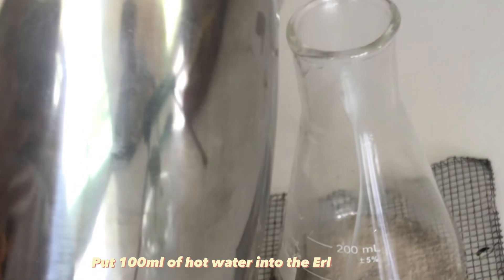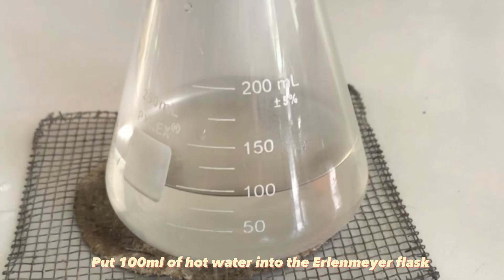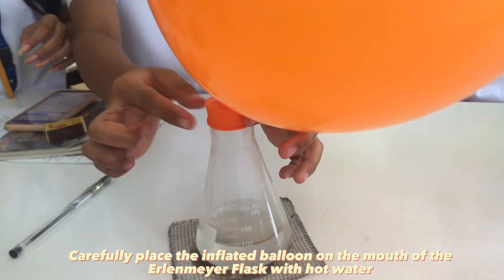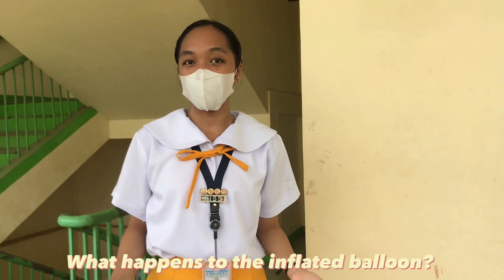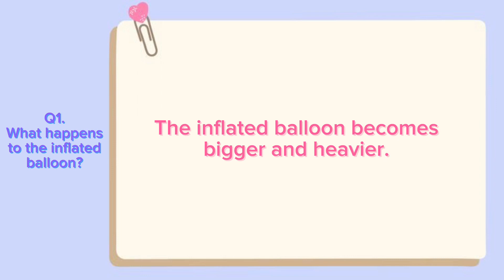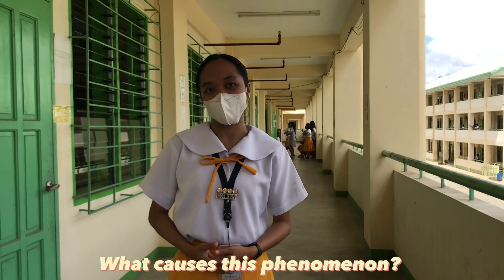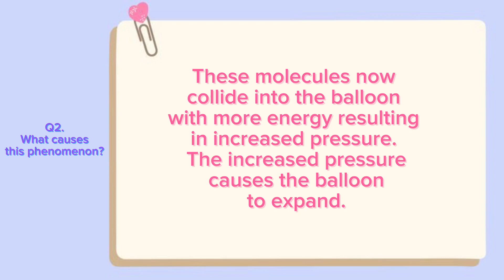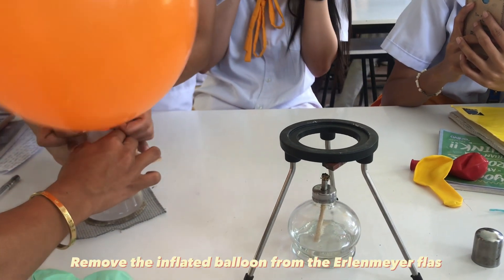First procedure: put 100 ml of hot water into the Erlenmeyer flask. Next, carefully place the inflated balloon on the mouth of the Erlenmeyer flask with hot water. What happens to the inflated balloon? The inflated balloon becomes bigger. What causes this phenomenon? Air molecules collide into the balloon with the same energy inside and outside the balloon. When the bottle is heated, the air molecules inside start moving faster. These molecules now collide into the balloon with more energy, resulting in increased pressure. The increased pressure causes the balloon to expand.